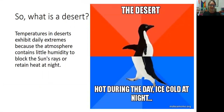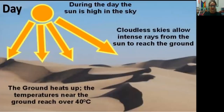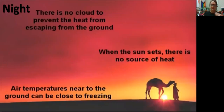Deserts are also inhospitable, meaning they're difficult to live in because of the extreme temperatures. Because the atmosphere in deserts is so dry, temperatures are extremely hot during the day and extremely cold at night. During the day, there are very few clouds in the sky, which allows the sun's radiation to easily reach the ground and heat up the land surface. But then at night, there are no clouds to prevent the heat from escaping, and there's not a lot of moisture in the air to trap that heat near the ground. So when the sun sets, there's no source of heat, and the land quickly becomes very cold.